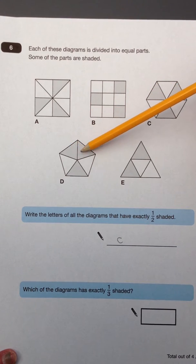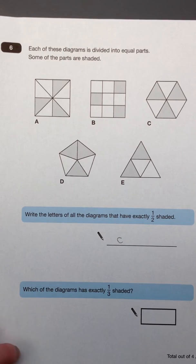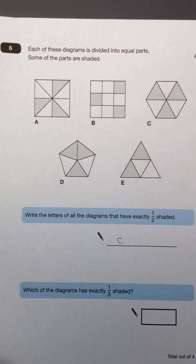D has been divided into 1, 2, 3, 4, 5 pieces. That's an odd number, so it can't have a whole number of pieces shaded. Certainly, 3 is not half of 5. So D does not have exactly half shaded.